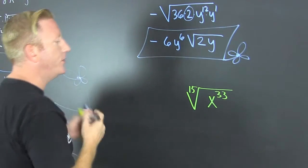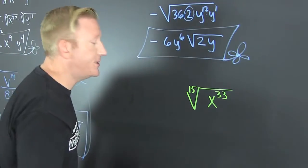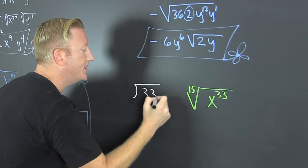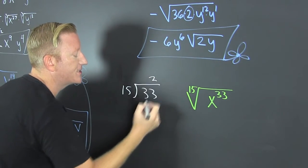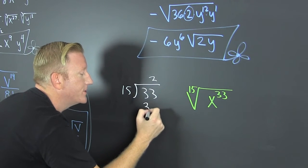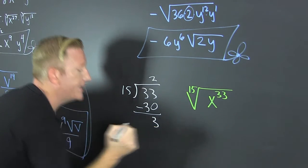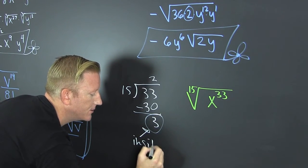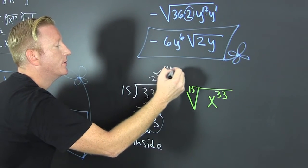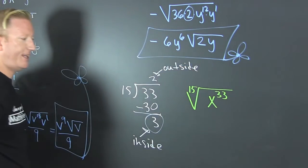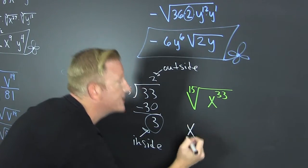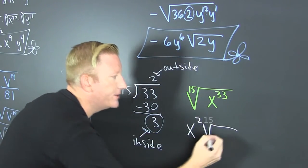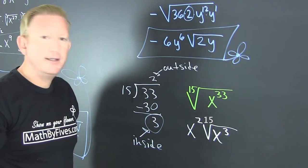Let's do this one a different way. Over there it was exponent divided by 2. Now it's something divided by 33, so let's go old school. Put 33 in and 15 out — doing the division: 33 goes into 15 zero times, so I deduce that's 30. I change the sign, I add down, and that's 3. This is our remainder, this is inside, this is outside. So that's going to be x to the 2 on the outside, and on the inside I have the remainder, that's x to the 3.